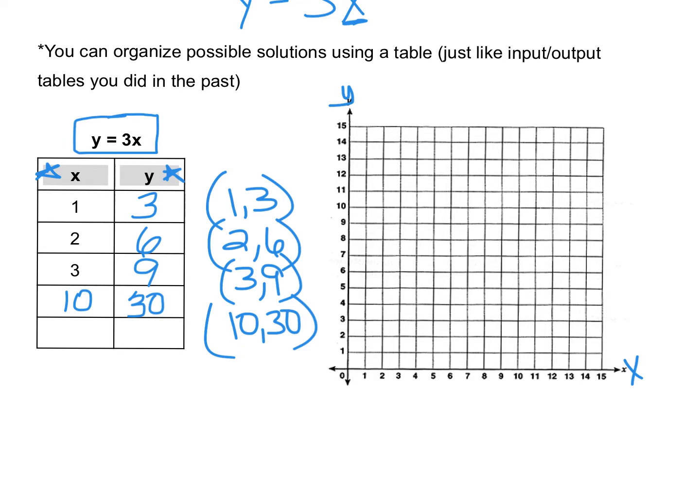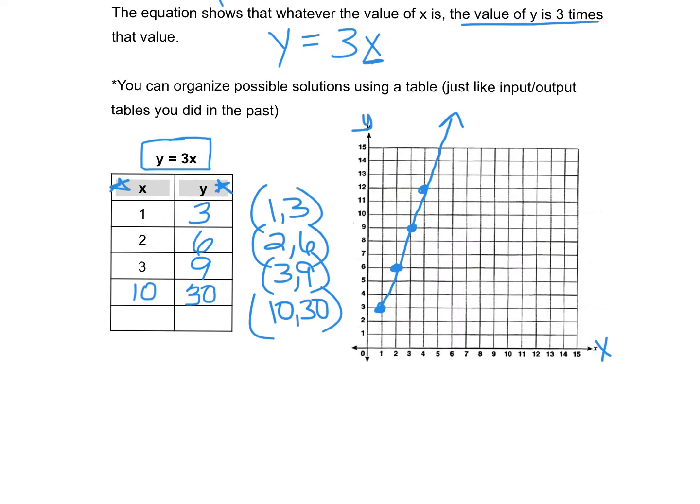We would graph those points just like we would graph any points. Our first one is at 1, 3. So we go over 1 and up 3. That point's going to be right here. The next one is at 2, 6. So we go over 2 and up 6. Then we go over 3, up 9. And we just keep going. If we would have done 4, we would have had 4, 12. Do you notice that our points are forming a straight line? If we continue this, they're just going to keep in that same pattern and it would go on forever. Any point on that line is going to be a solution to the equation y equals 3x.